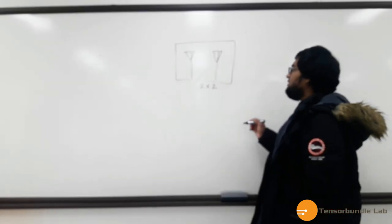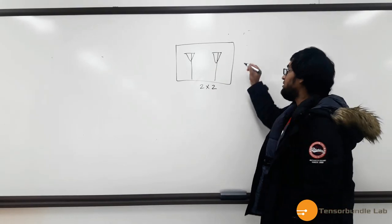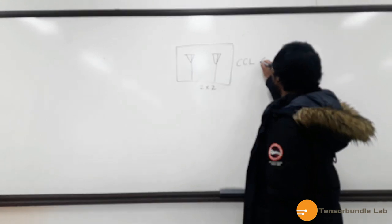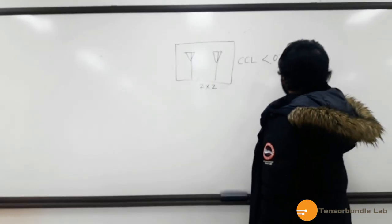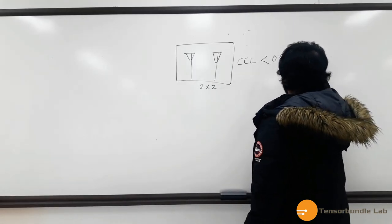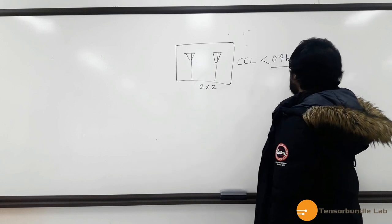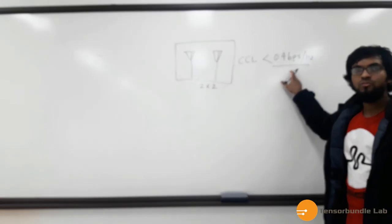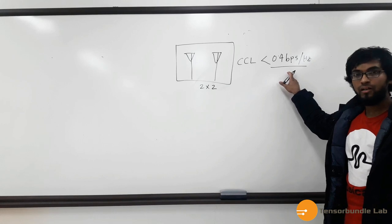And for practical MIMO system, the value of CCL should be always less than 0.4 bit per seconds per hertz. If it exceeds this value, then this is not a reliable MIMO antenna system.